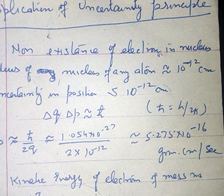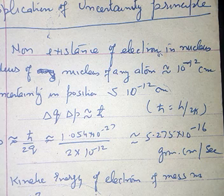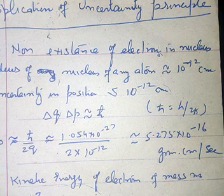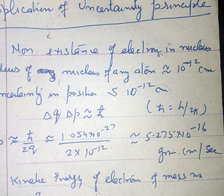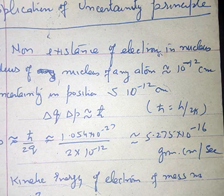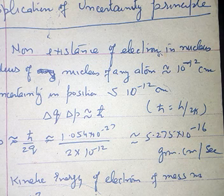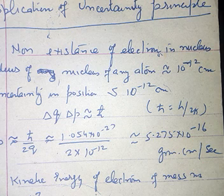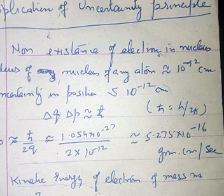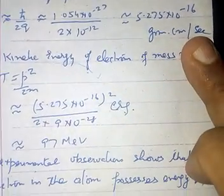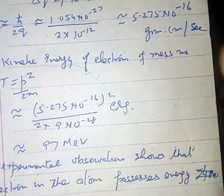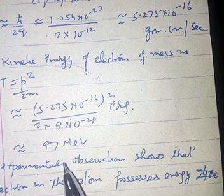The kinetic energy of the electron of mass m is given by T equal to p square upon 2m. Putting these values, p is 5.275 into 10 raised to the power minus 16, upon 2 into m, where m is the mass, 9 into 10 raised to the power minus 28 gram. On solving this equation, the above value comes to be 97 MeV.